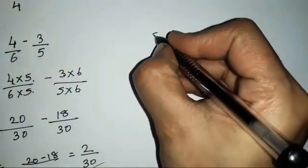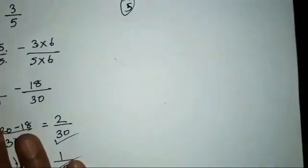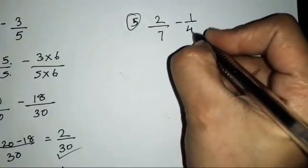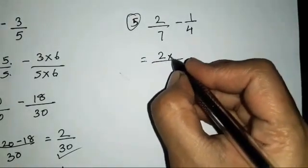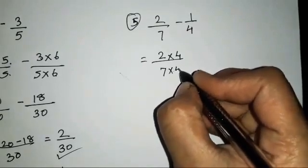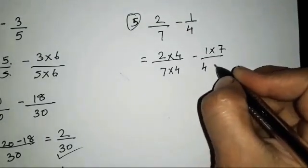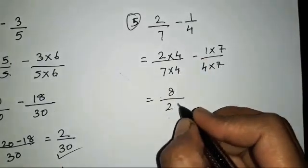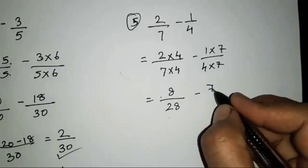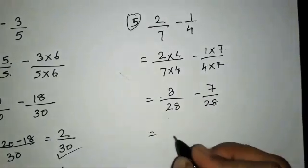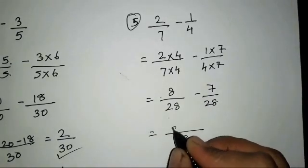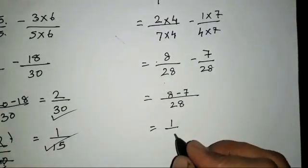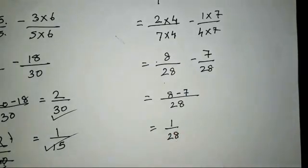The fifth sum is 2/7 minus 1/4. We multiply: 2×4 = 8 over 7×4 = 28, minus 1×7 = 7 over 4×7 = 28. Then 8 minus 7 equals 1/28. This does not need further reduction.